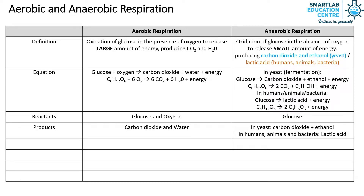When there is an accumulation of lactic acid during exercise, it leads to soreness and fatigue, but it wouldn't cause muscle cramps or muscle tear. In aerobic respiration, a large amount of energy is released. In anaerobic respiration, a small amount of energy is released.